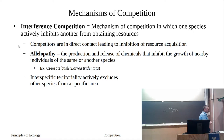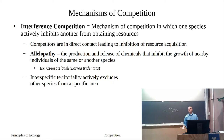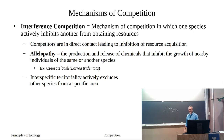Interference competition is a form of competition in which one species actively inhibits another from obtaining resources. These individuals are in direct contact, leading to inhibition of resource acquisition. In exploitation competition, one individual just gets there first — like Kyle sitting in his seat, he exploited it. Interference competition is when all four students rush in for one available seat — that's direct interaction, that's interference.